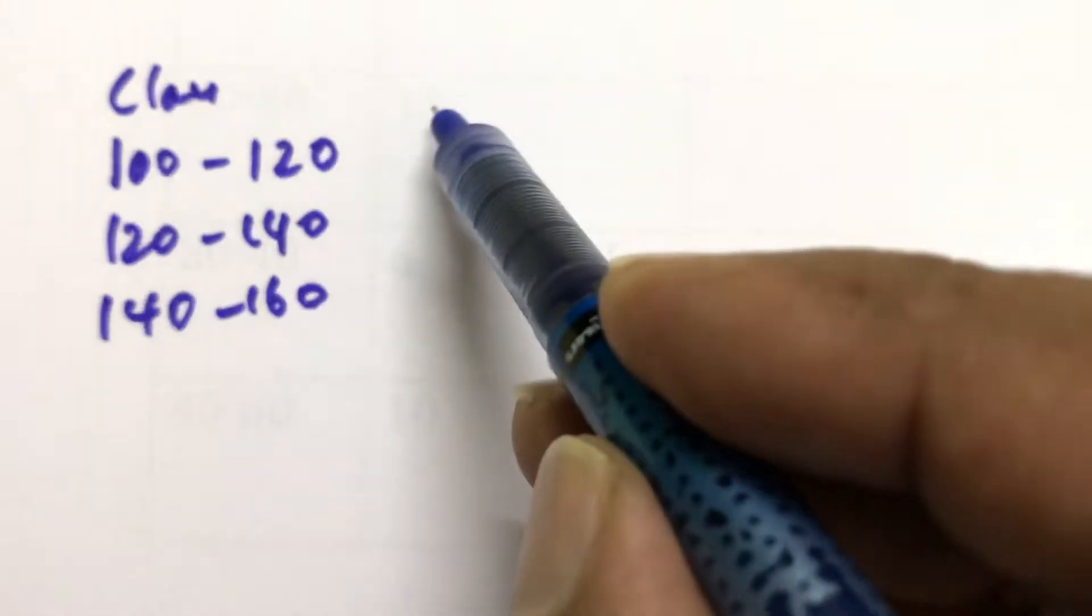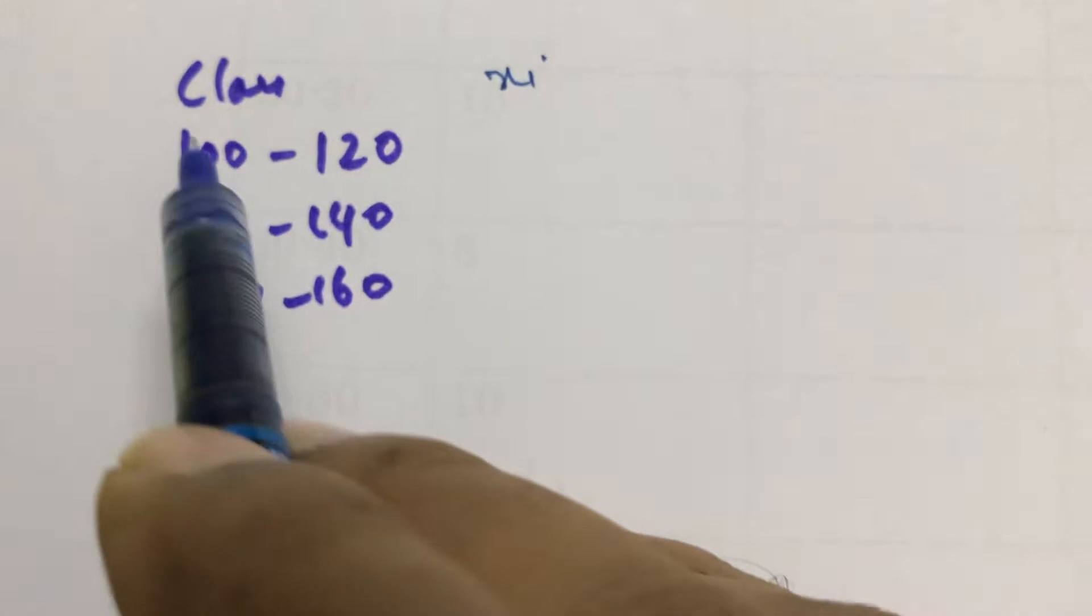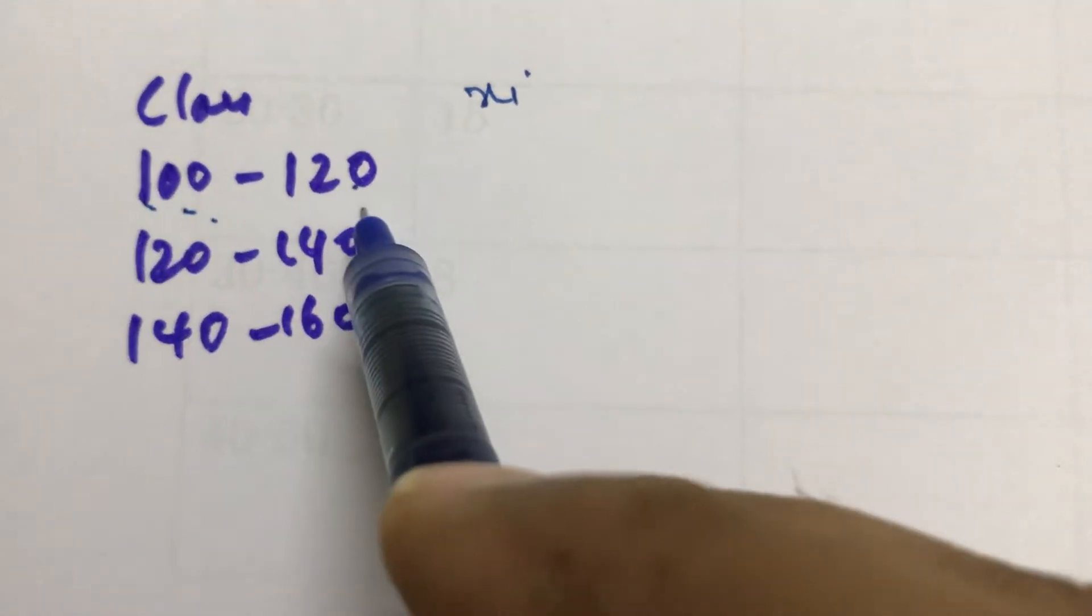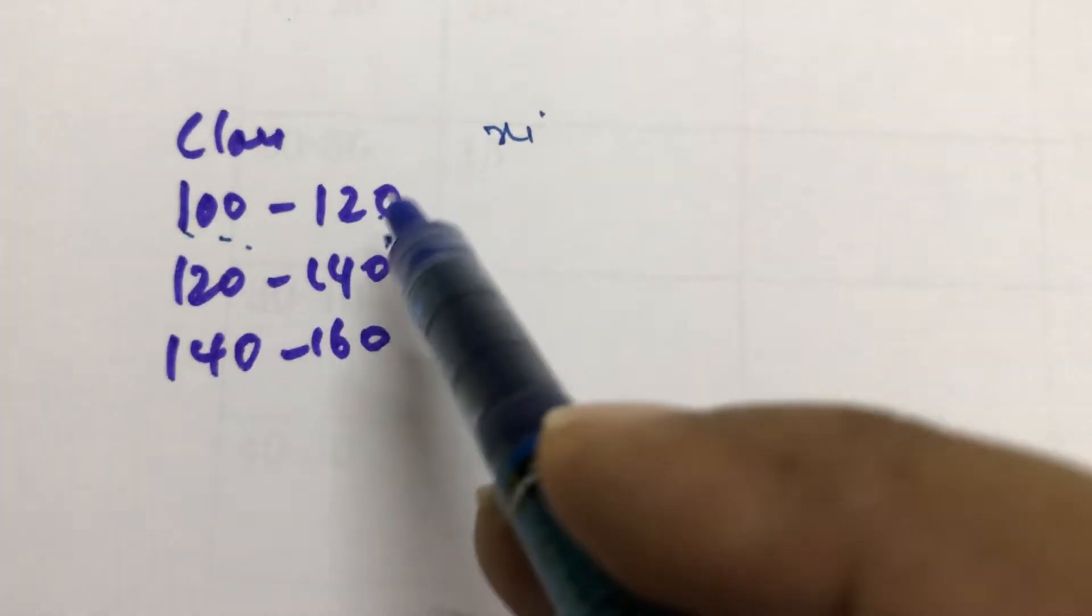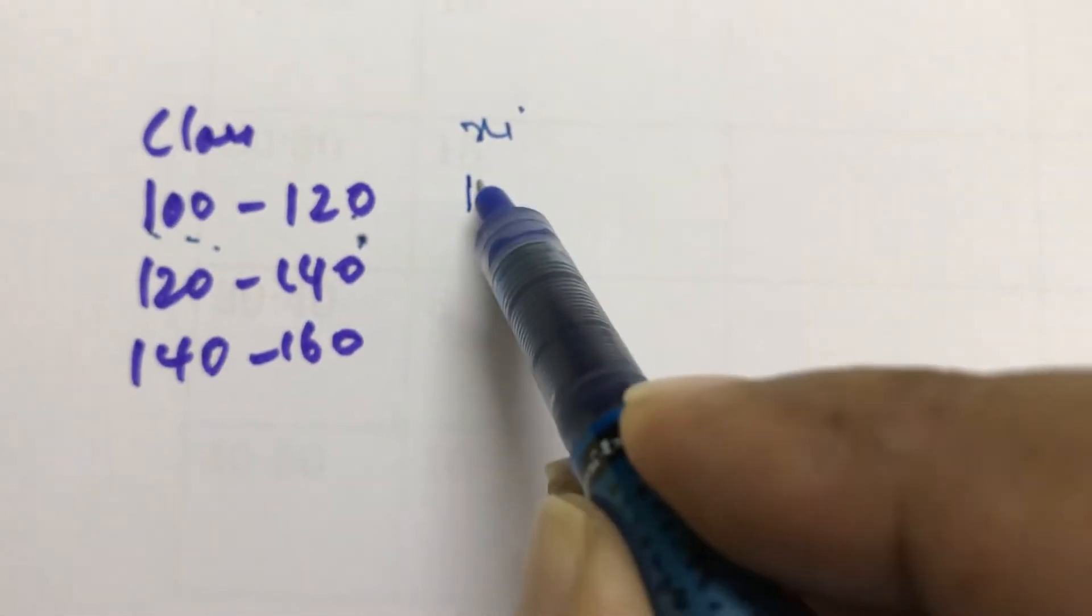Now here, one more class I took as example. x_i. Add and divide by 2. 100 plus 120 is 220. 220 by 2 is 110.